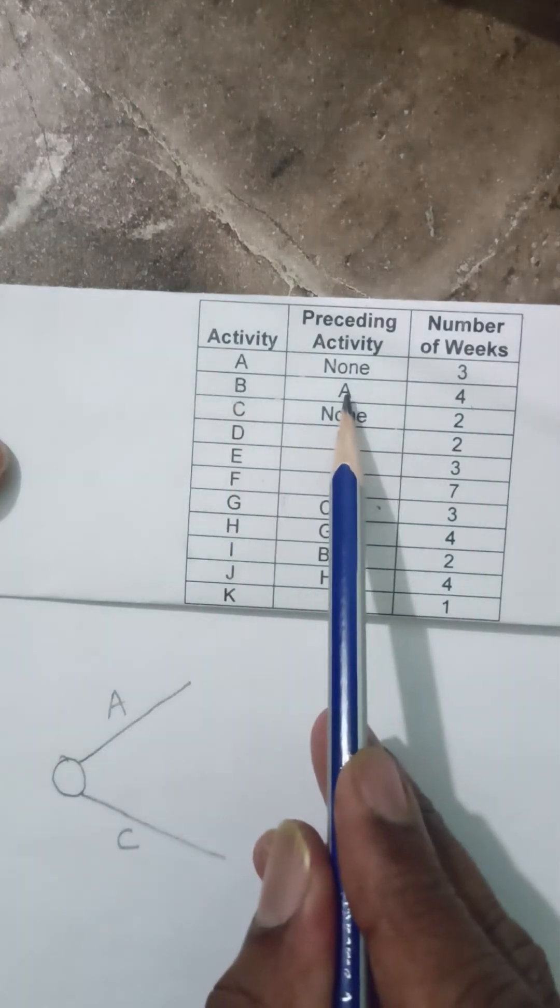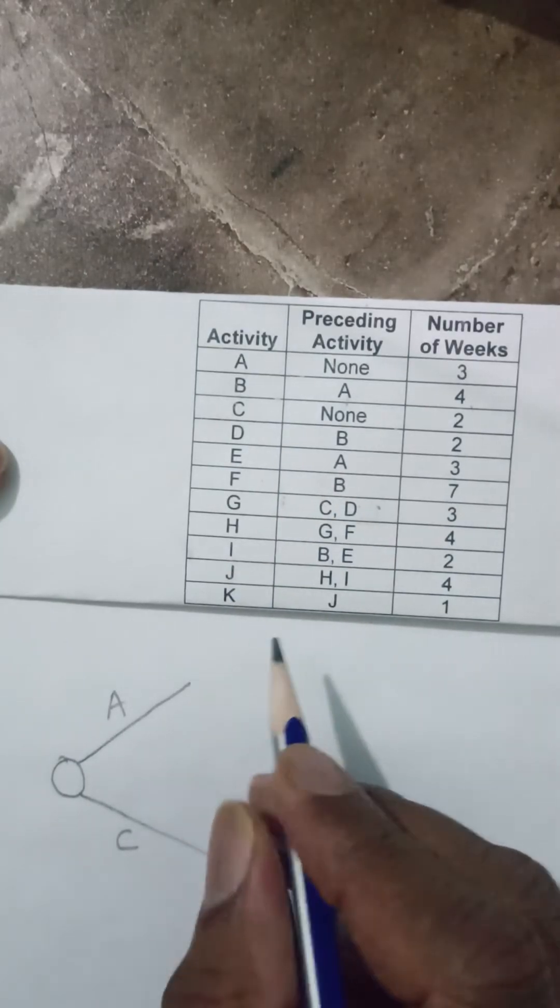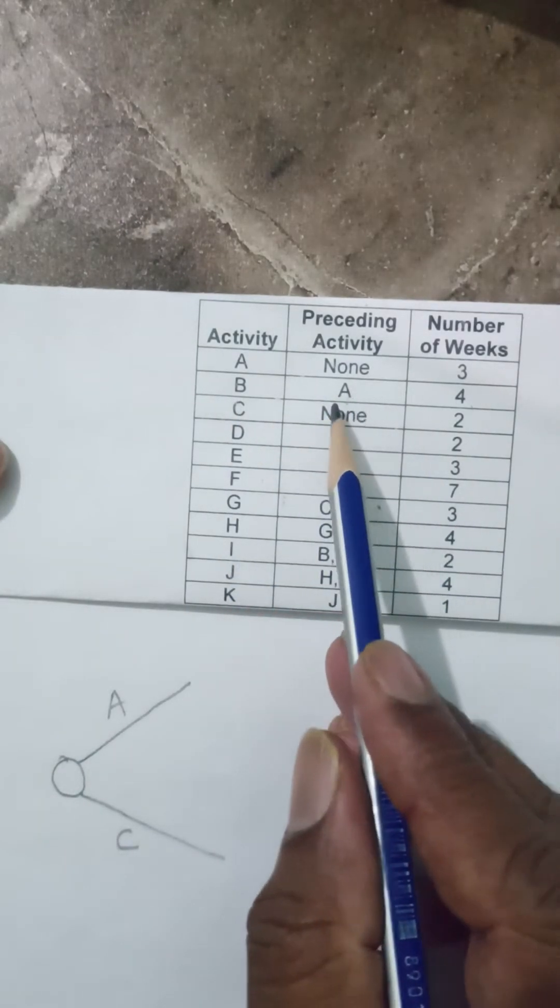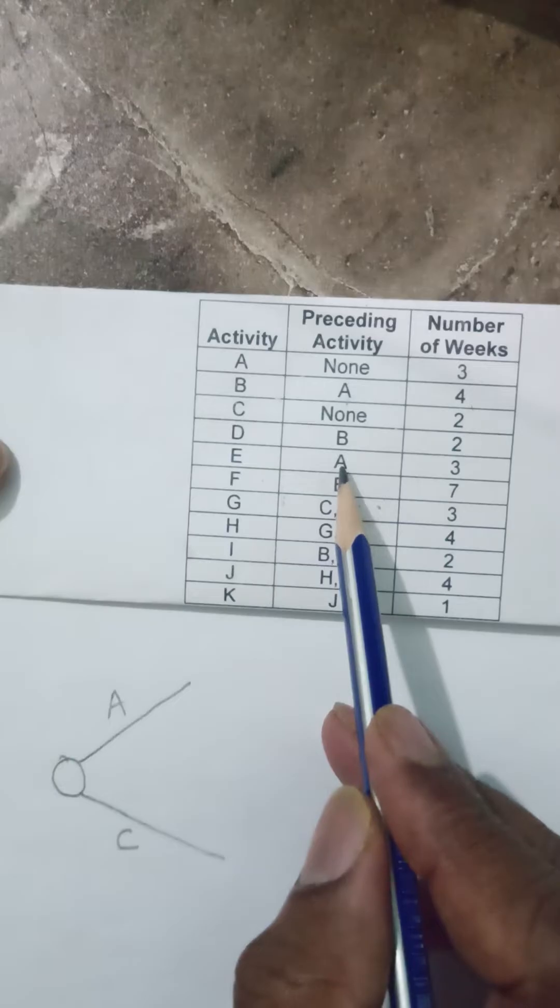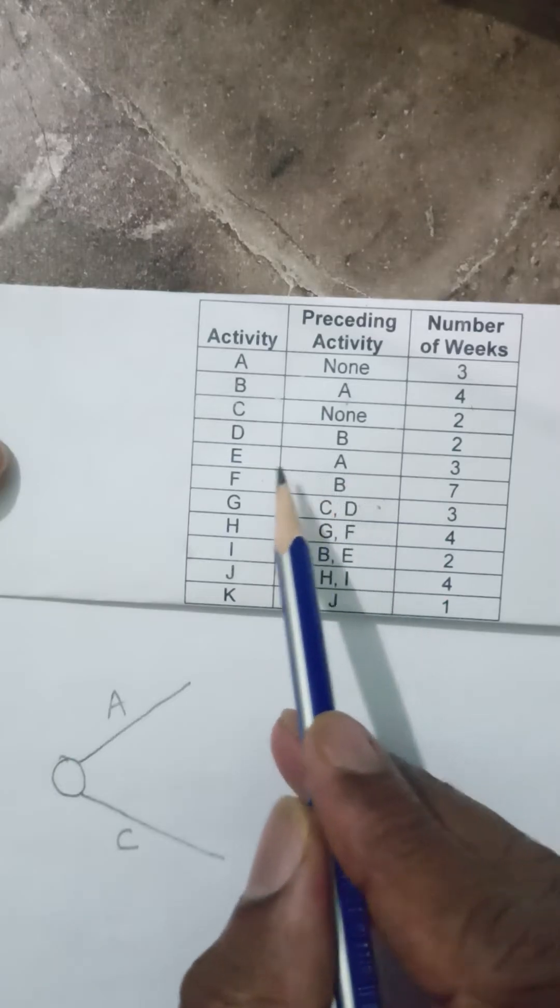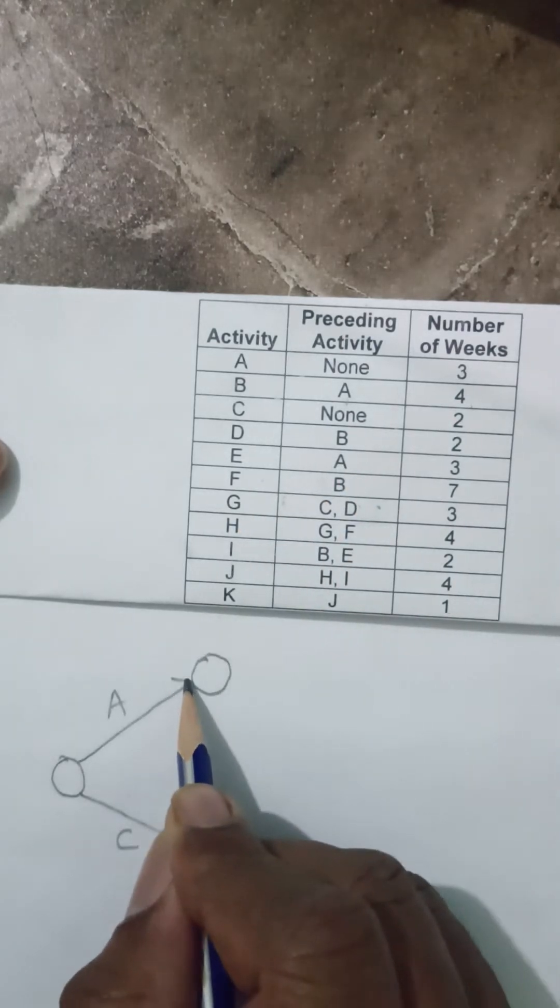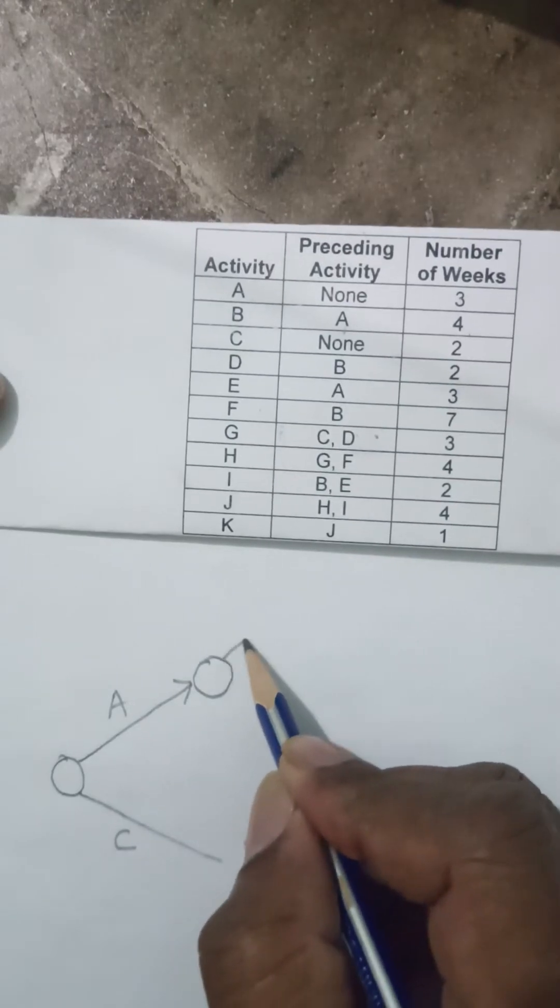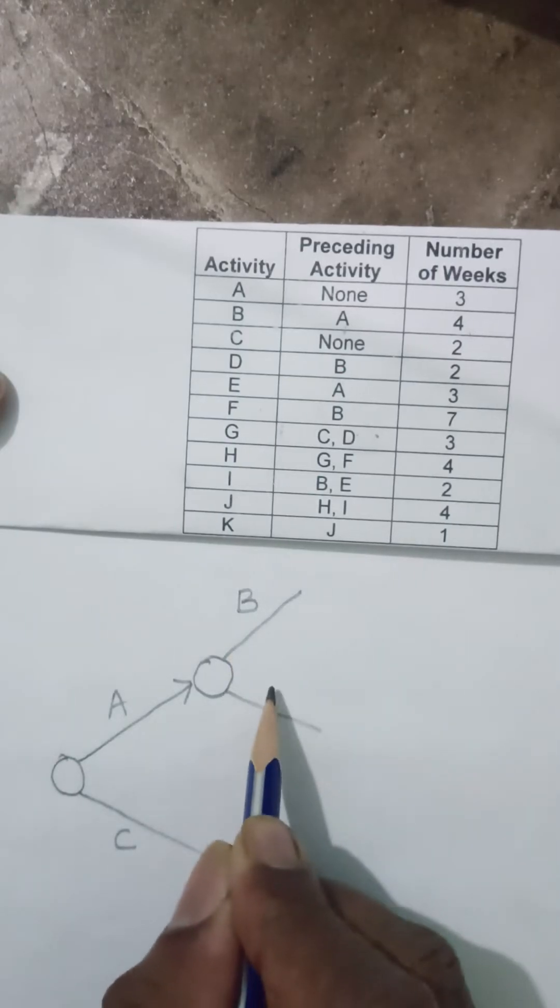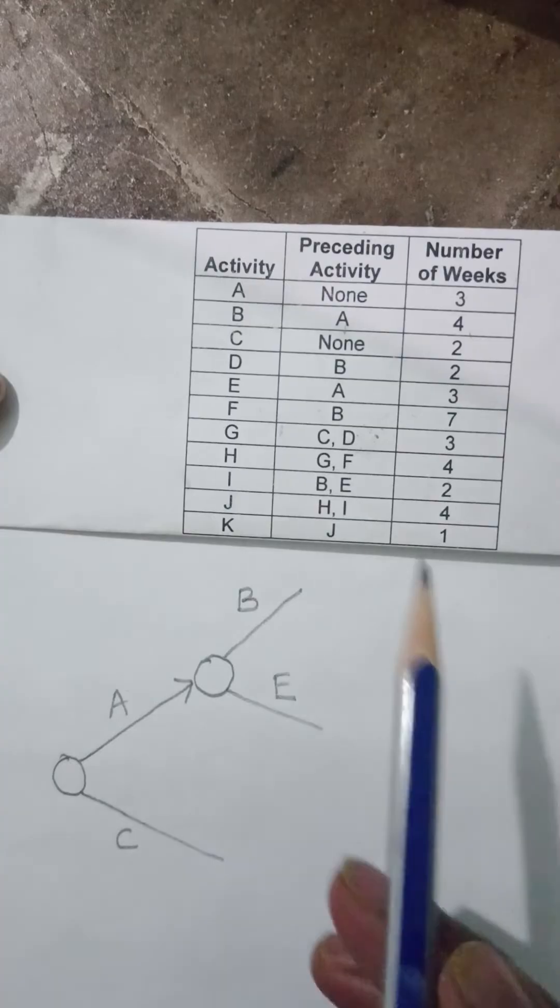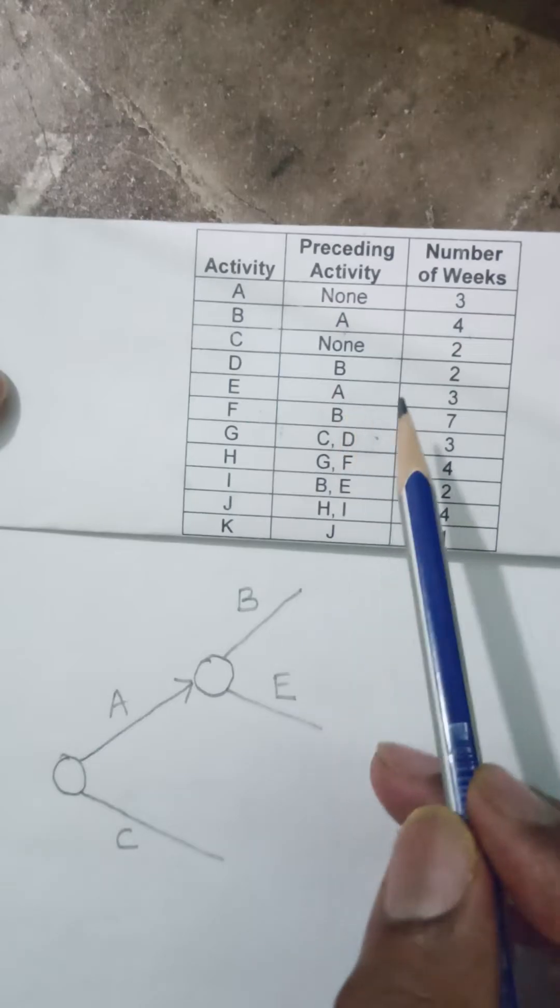For B, I have to end the activity A and start B. When I am doing that, I have to see down. There is one more activity which requires A to end, and that activity is E. So I can end this activity A and bring two arrows from it out. One can be B and the other can be E. Because there are two different activities which depend on A.